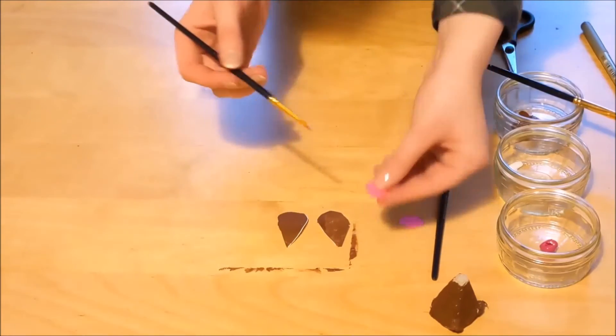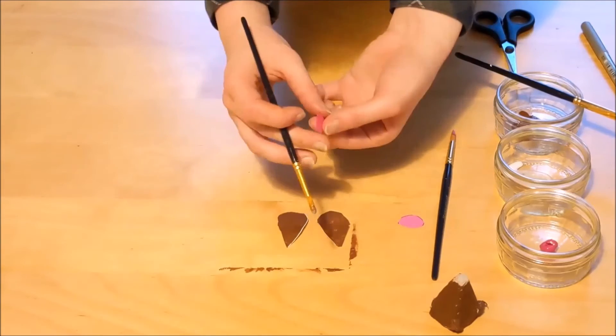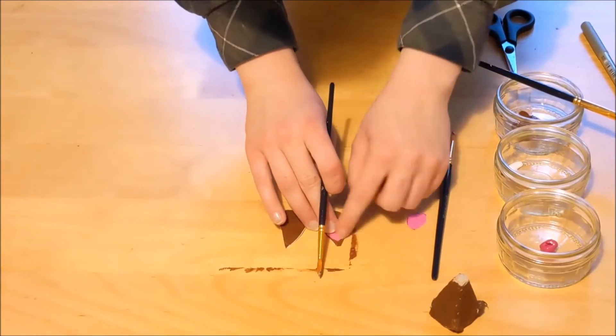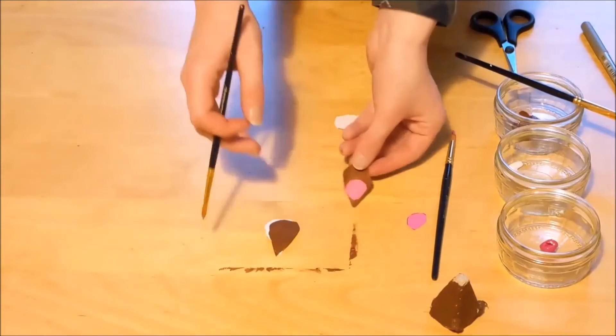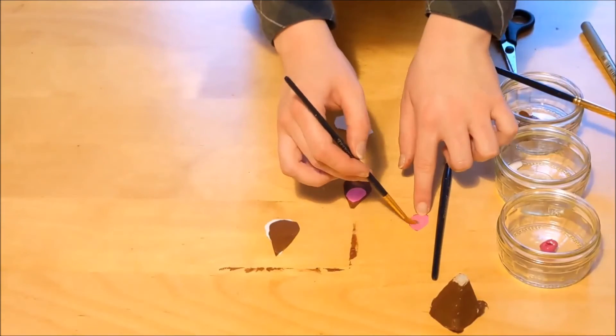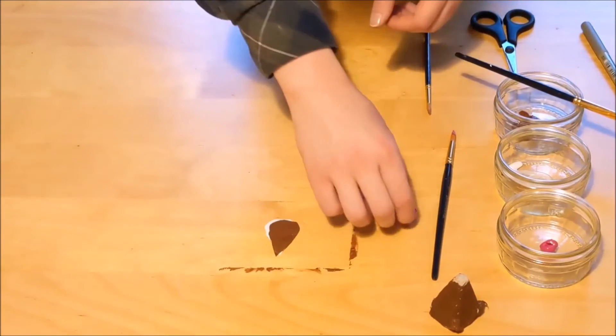Next, get some PVA glue and paint one of the sides of the pink circles and just attach it to the bottom part of the ear. Just like that. Exact same thing for the other ear, and your ears are finished.